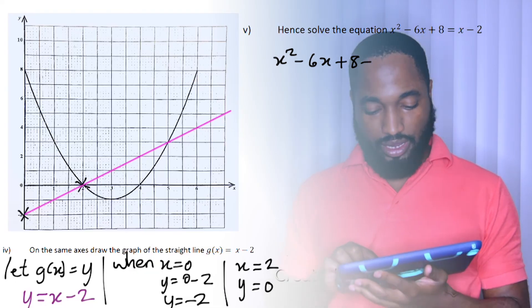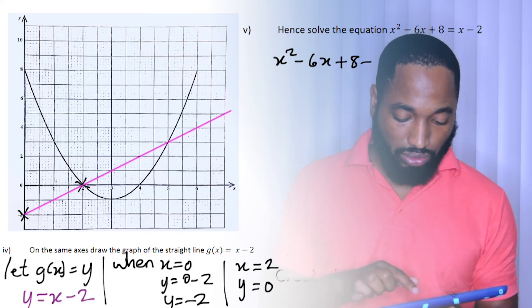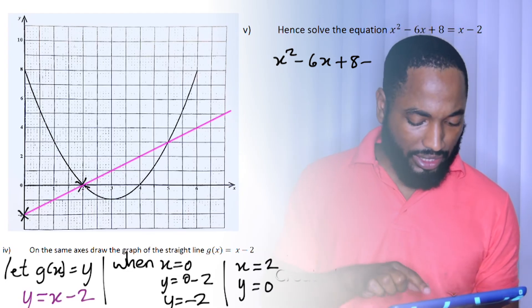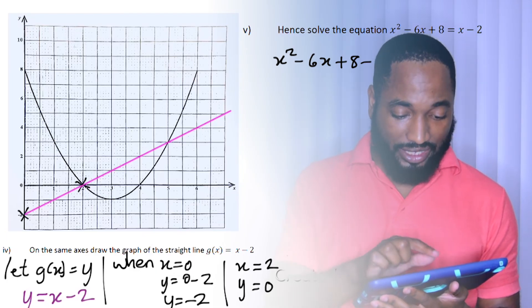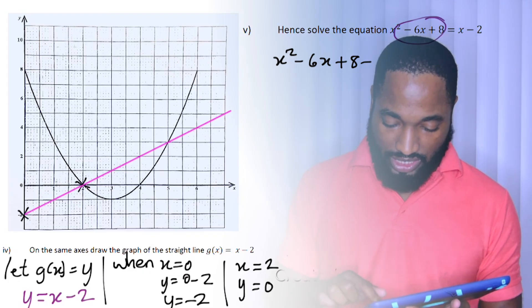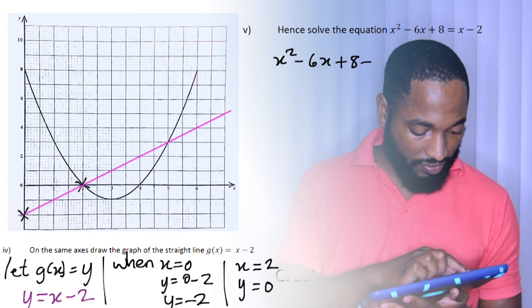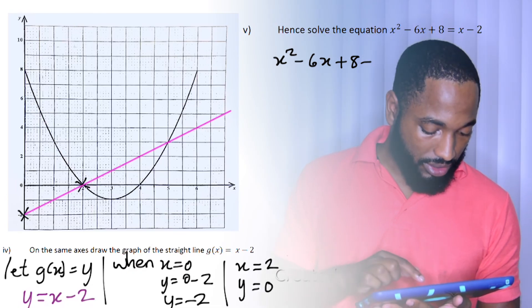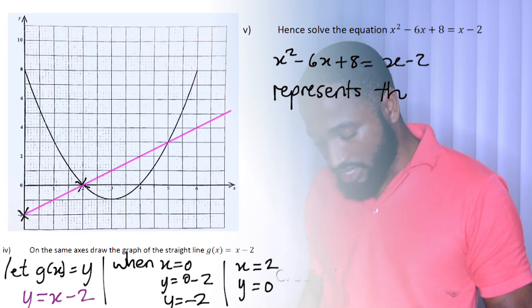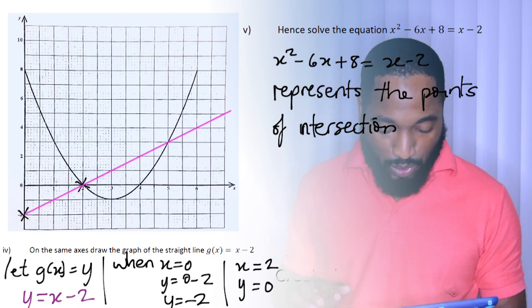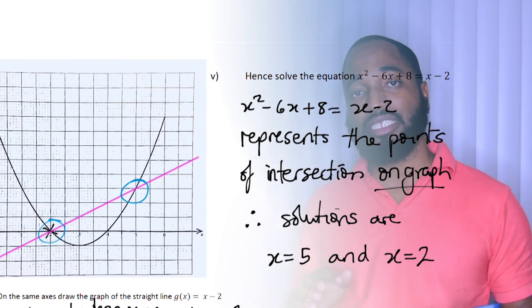This is our next part: hence solve the equation x² - 6x + 8 = x - 2. I think this may be the last part of the question. This is basically an intersection. This is one function and this is the next function. This is the line and this is the quadratic curve, also known as a parabola. Where do they intersect? That's the answer to this question. This represents the point of intersection on graph. Therefore, solutions are x = 5 and x = 2.